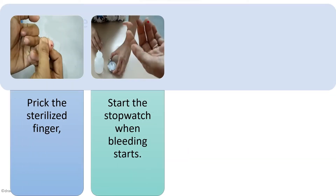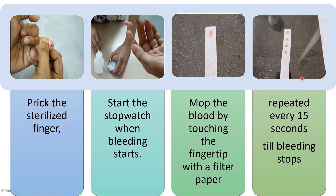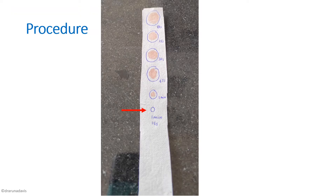In Duke's method, we first prick the finger, then start the stopwatch when bleeding starts, and mop the blood by lightly touching the fingertip with filter paper to get a stain. We repeat this every 15 seconds until the bleeding stops. Each stain is marked with its time: 0 seconds, 15 seconds, 30 seconds, and so on. Once bleeding stops, an empty circle is drawn and the total time is recorded. This is how the filter paper should look for the exam — each stain circled with its time noted.